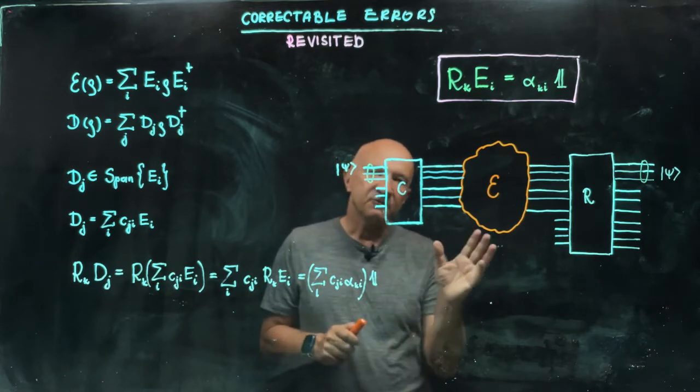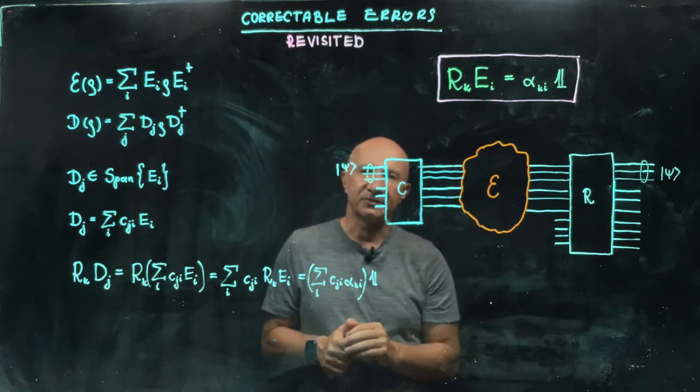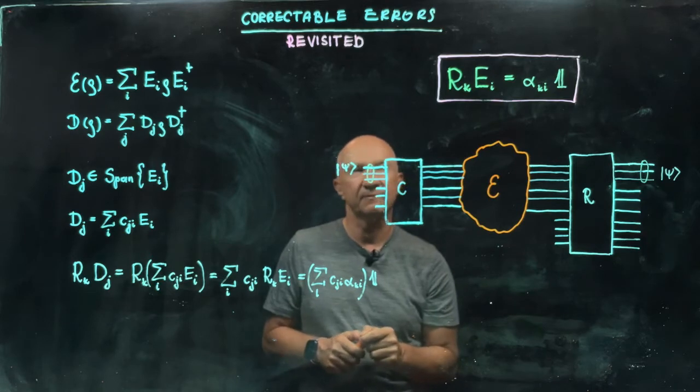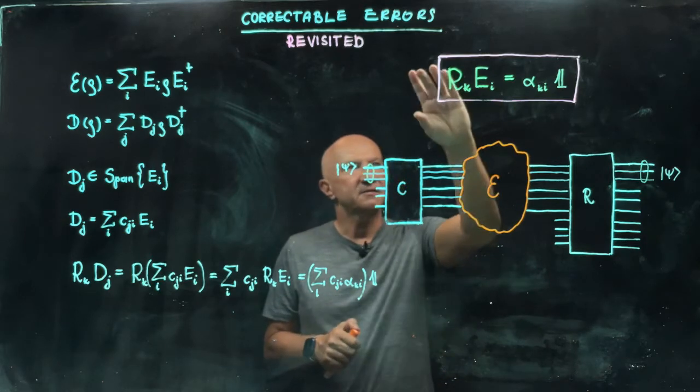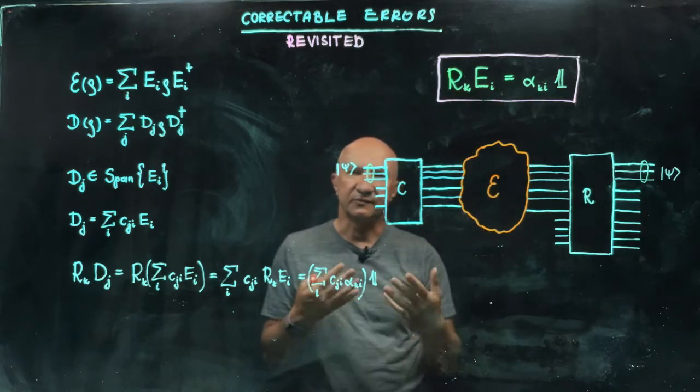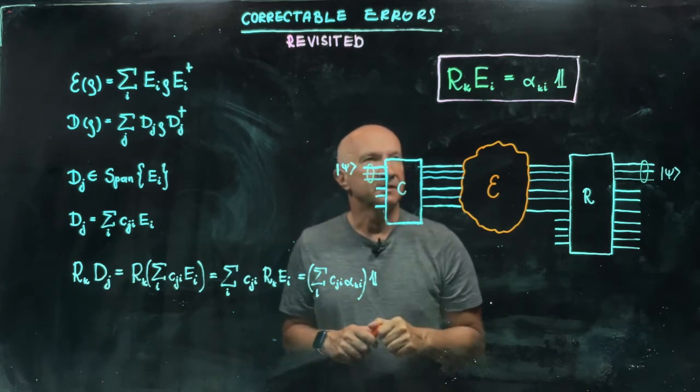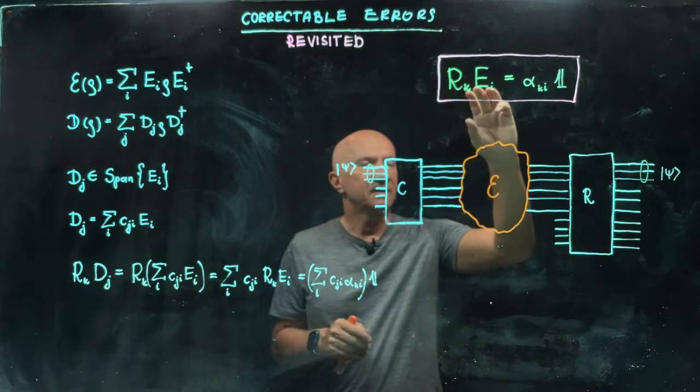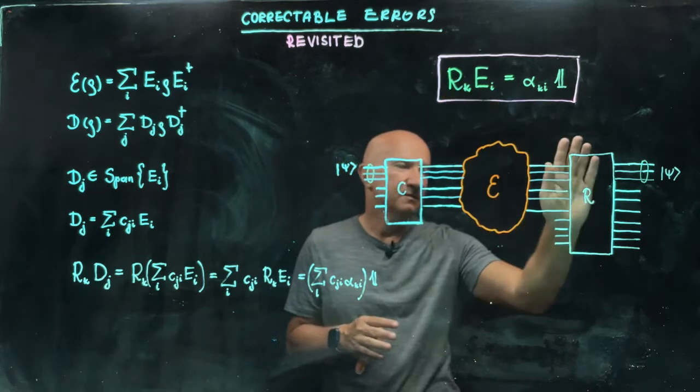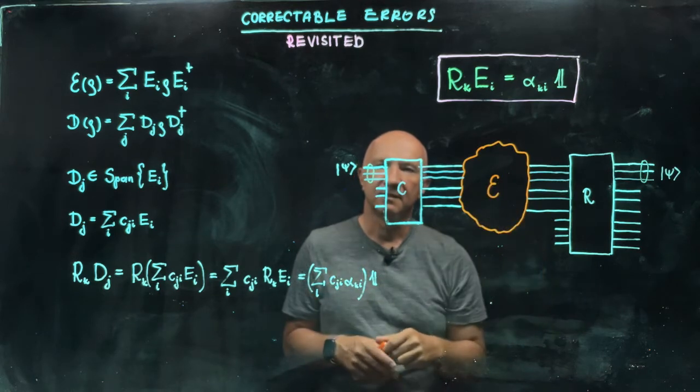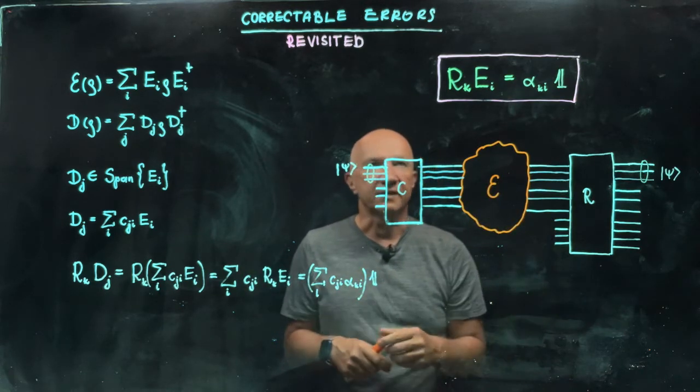Now, the good news is it's not the case that it's really custom-made for this one completely positive map. If you look at the condition for the recovery, something that we actually discussed some time ago, the condition says that when we have a fixed recovery channel and it has Kraus representation.